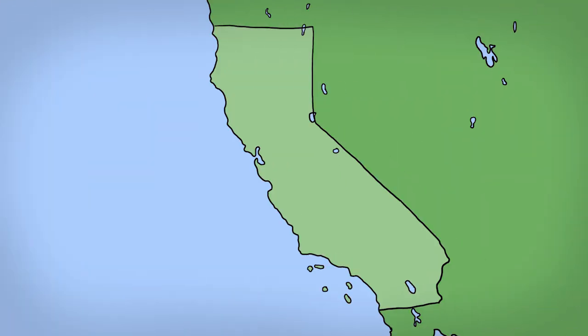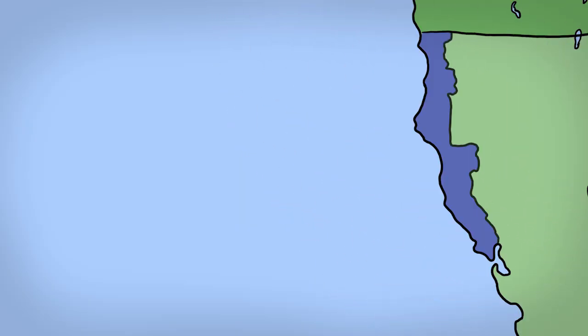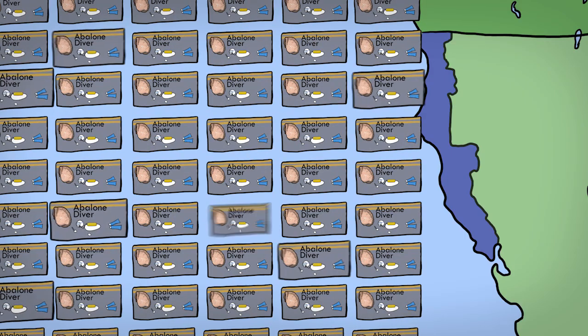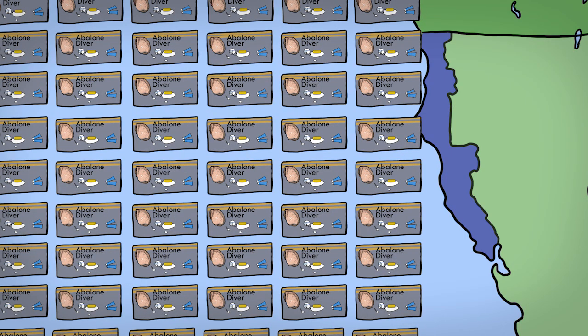Some researchers looked at the value of recreational fishing of abalone along the coast of California, Conservation Strategy Fund researchers actually. To fish abalone, you have to be registered, and you're expected to keep records of where you catch the abalone, so they just drew from that to find the population of the fishermen and where they go.